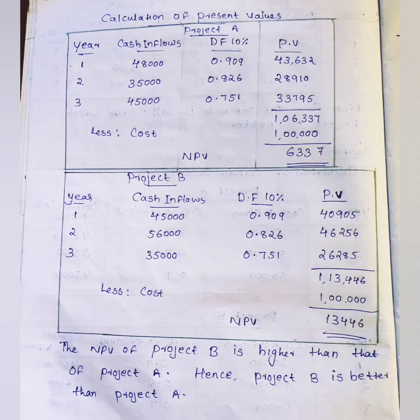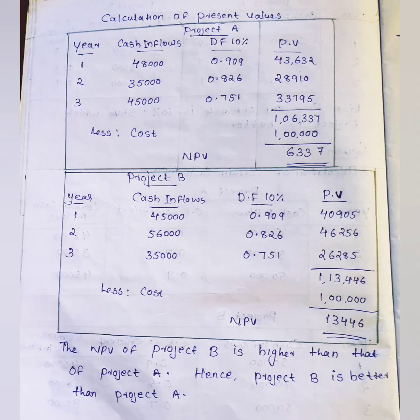The total present value is calculated by multiplying certain cash inflows by the present value factors and summing them. Then we subtract the initial investment of Rs. 1,00,000 to calculate the net present value. For Project A, NPV = Rs. 1,06,337 minus Rs. 1,00,000.